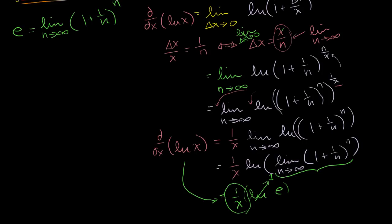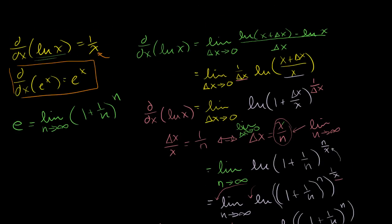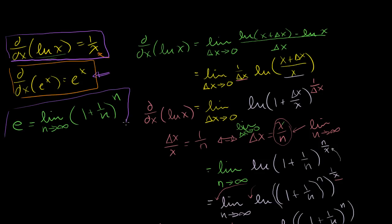So far, I think you'll be satisfied that we've proven this first statement — and in no way did we use the derivative of e to the x. I just used the definition of e, and we assume we know what e is even when we talk about natural log being base e. In no way did I assume the derivative of e to the x to begin with. Now, given that we've shown the derivative of ln(x) without assuming anything else, let's see if we can show the derivative of e to the x.